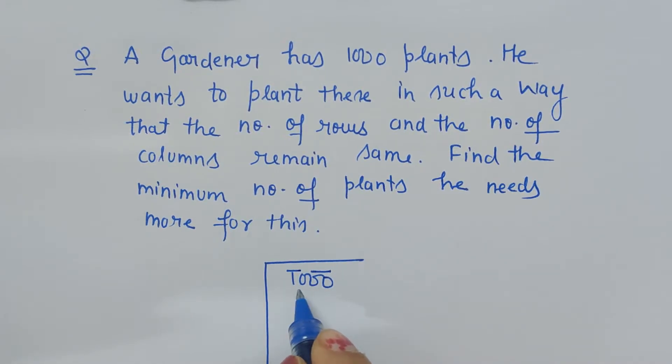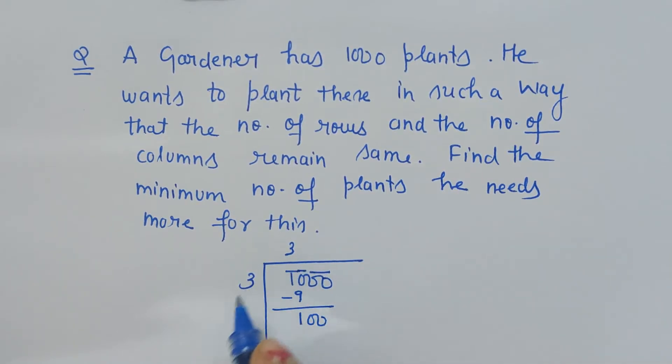Let's do it in the same fashion. The nearest perfect square to 10 is 3. 3 times 3 is 9, the remainder is 1, and we bring down double 0. Now we double it, double 3 so it's 6.